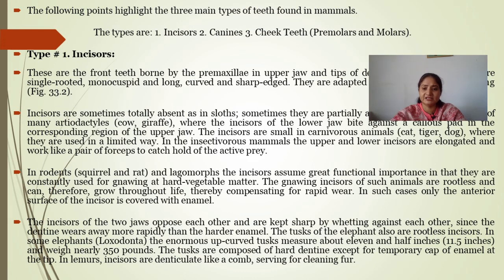Incisors are rootless and can therefore grow throughout life, thereby compensating for rapid wear. In such cases, only the anterior surface of incisors is covered with enamel and growth produces new teeth. Incisors are completely absent in some animals, and partially absent in sloth in the lower jaw. The tusks of the elephant are also rootless incisors.